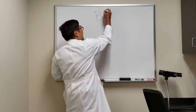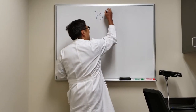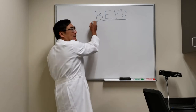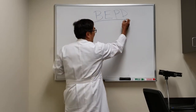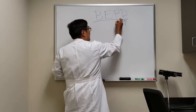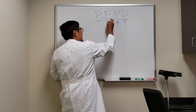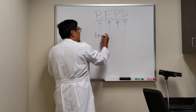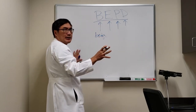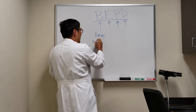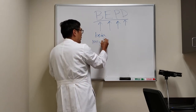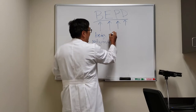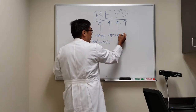Today we're going to be talking about benign episodic pupillary dilation, which is BEPD. It's dilation of the pupil that is episodic and benign — benign because there's no imaging necessary and there's no identifiable cause. It's usually idiopathic or considered to be a migraine equivalent. It's episodic, which means it comes and goes.